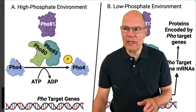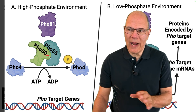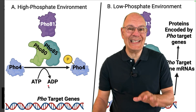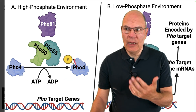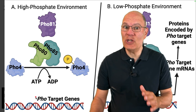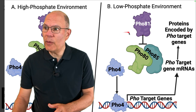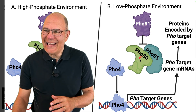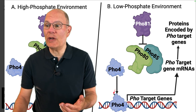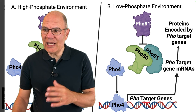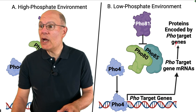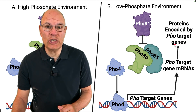A simplified model of this pathway is shown in figure one. In a high phosphate environment, the FOX80/FOX85 complex takes FOX4 and phosphorylates it — it takes a phosphate from ATP and plants it onto FOX4 — and the DNA is not doing anything. In a low phosphate environment, FOX81 inhibits the FOX80/FOX85 complex, enabling FOX4 to act as a transcription factor, interacting with DNA, expressing FOX target gene mRNAs, which become proteins encoded by those FOX target genes.